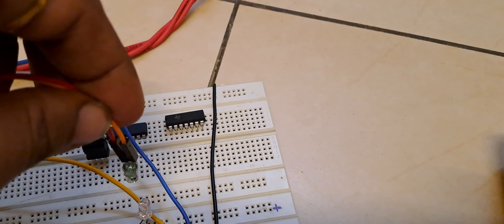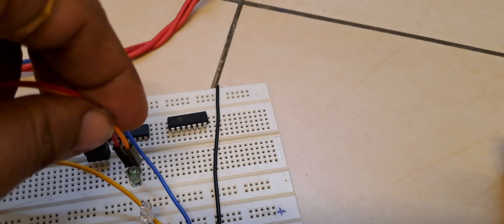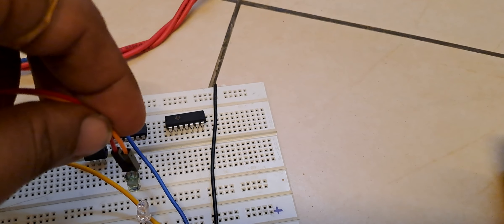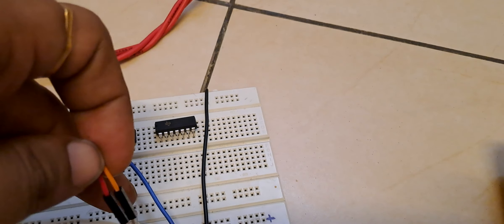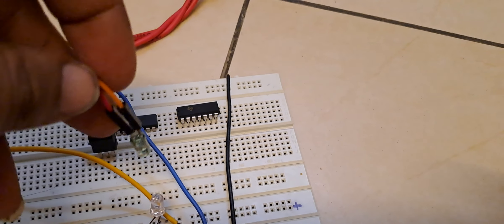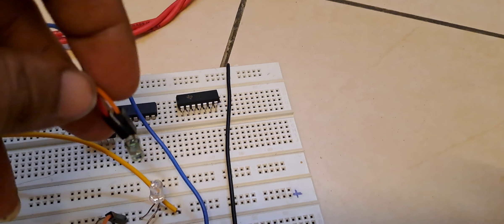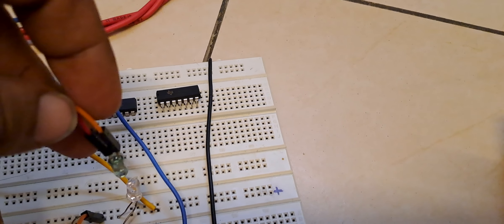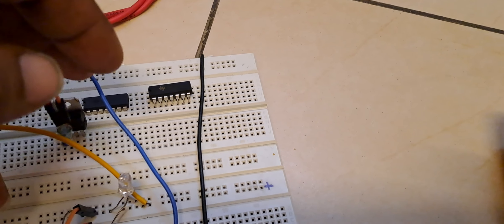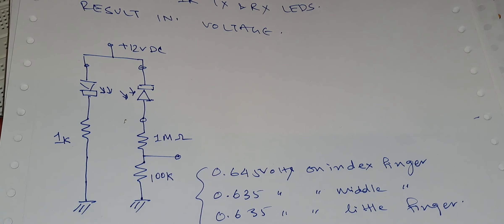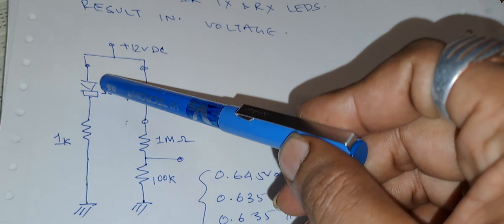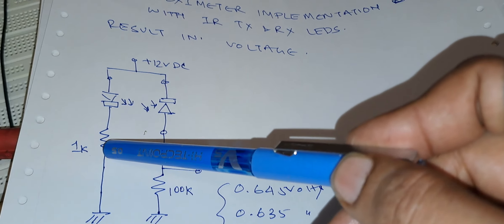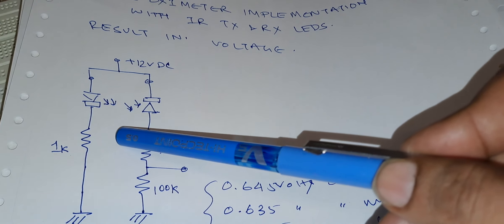I am going to put my index finger. Already I am measuring the index finger, so I will measure the middle finger. You can see this is the measurement of the middle finger. So this is the measurement of the ring finger. And this is the measurement of the little finger.